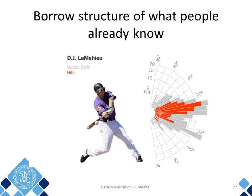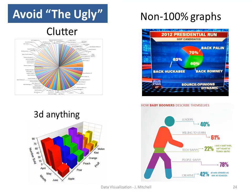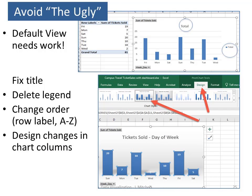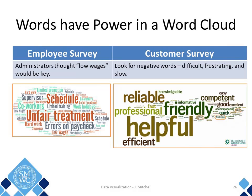Another example is to borrow structure from what people already know. This man was one of the best hunters in the American League for the Yankees, so your audience would need to understand baseball if you use this analogy. Remember to avoid clutter, 3D anything, and graphs that add up to more than 100%. Pay attention to detail by providing descriptive titles and remove legends that are not needed. The average person is subjected to 174 newspapers' worth of information every day, but filters it down to just 1% — meaning 99% of daily information is thrown away. We don't want our information thrown away.